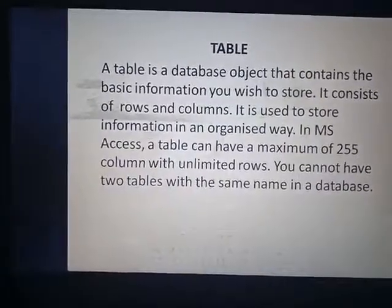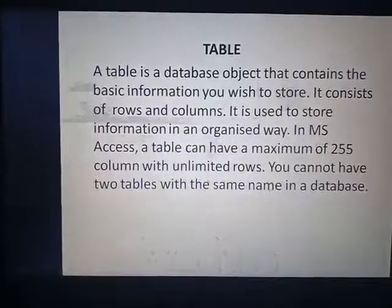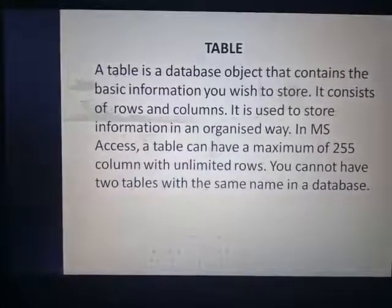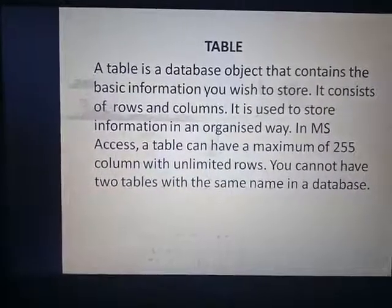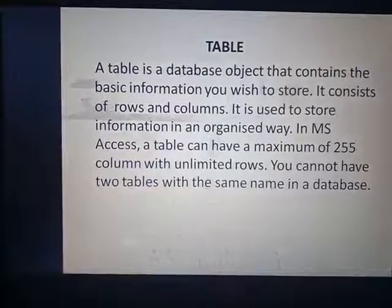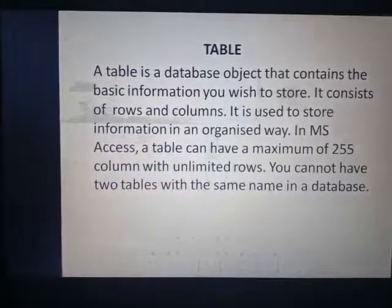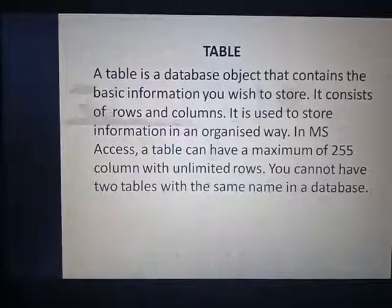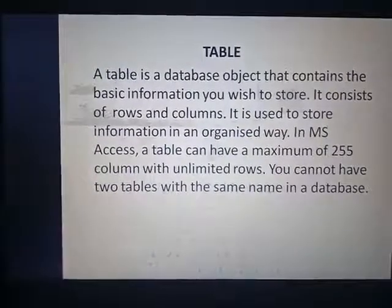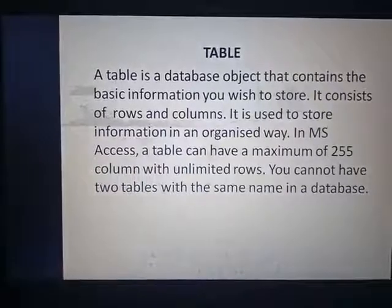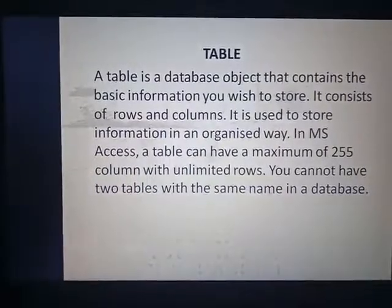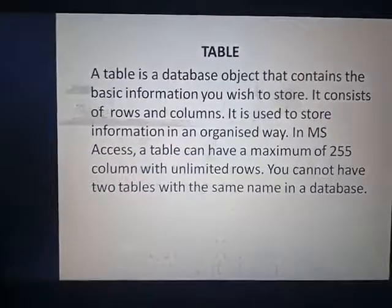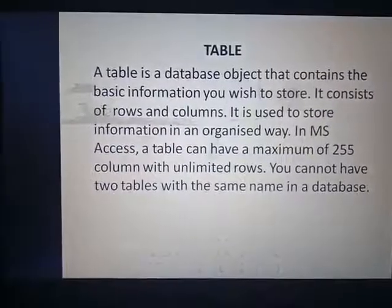Table. A table is a database object that contains the basic information you wish to store. It consists of rows and columns and is used to store information in an organized way. In MS Access, a table can have a maximum of 255 columns with unlimited rows. You cannot have two tables with the same name in a database.